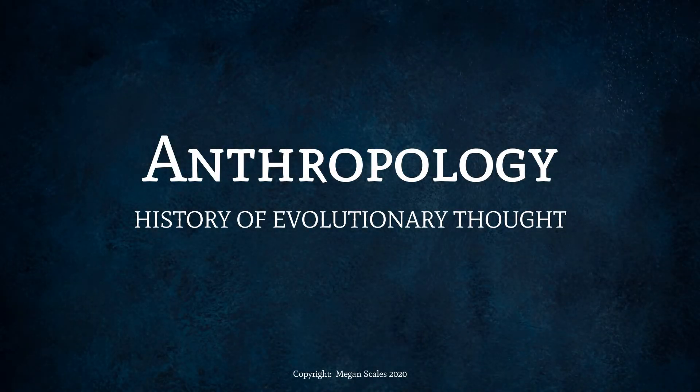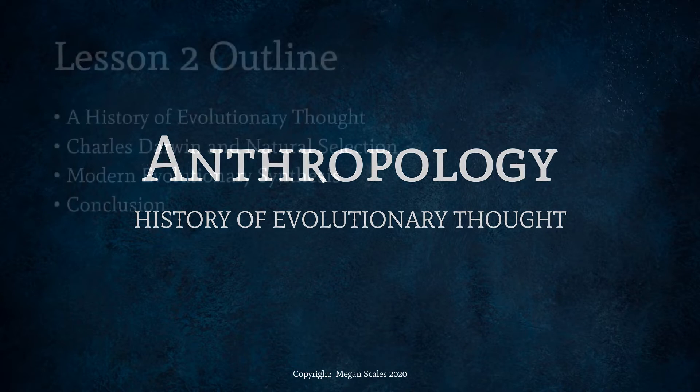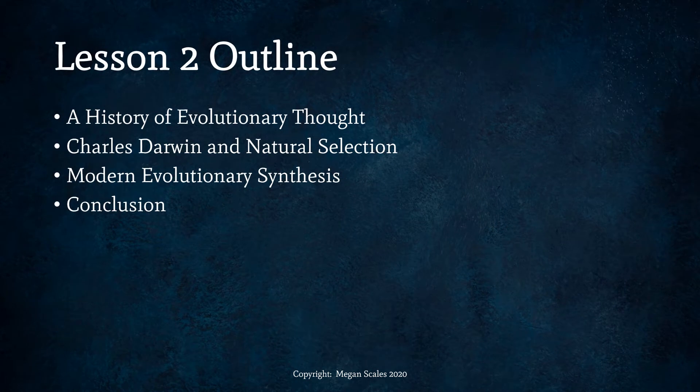Welcome back to Biological Anthropology — some of you are taking this class and it's called Physical Anthropology. This is lesson two: History of Evolutionary Thought. We are going to talk about how scholars came up with ideas around biological evolution and how life on Earth evolved. Included in these scholars is probably one of the most famous names in evolution: Charles Darwin.